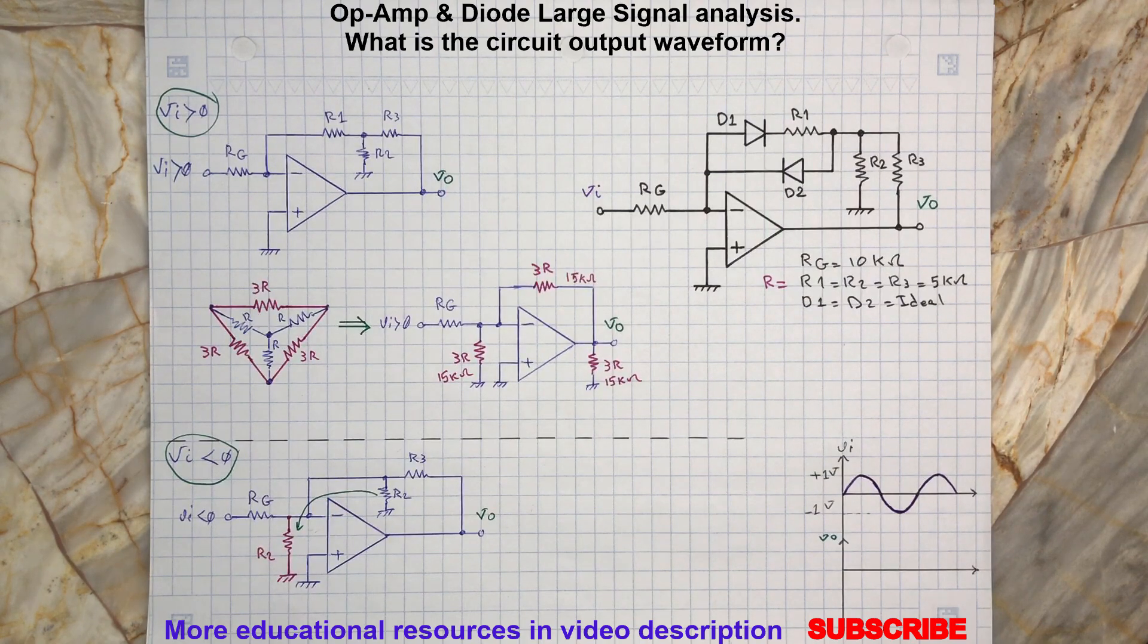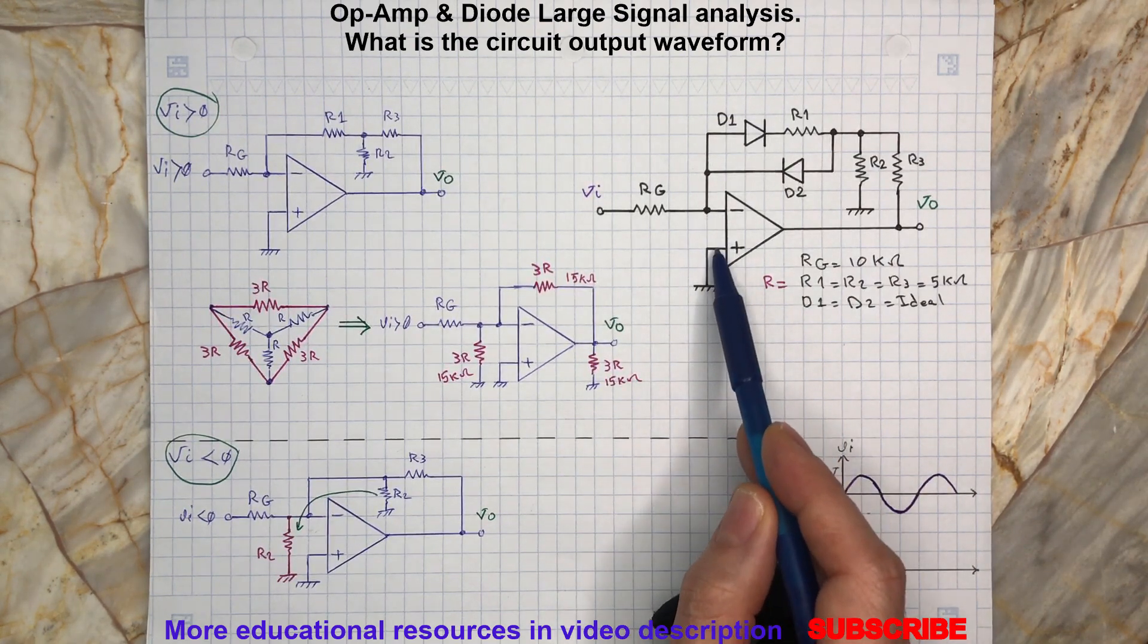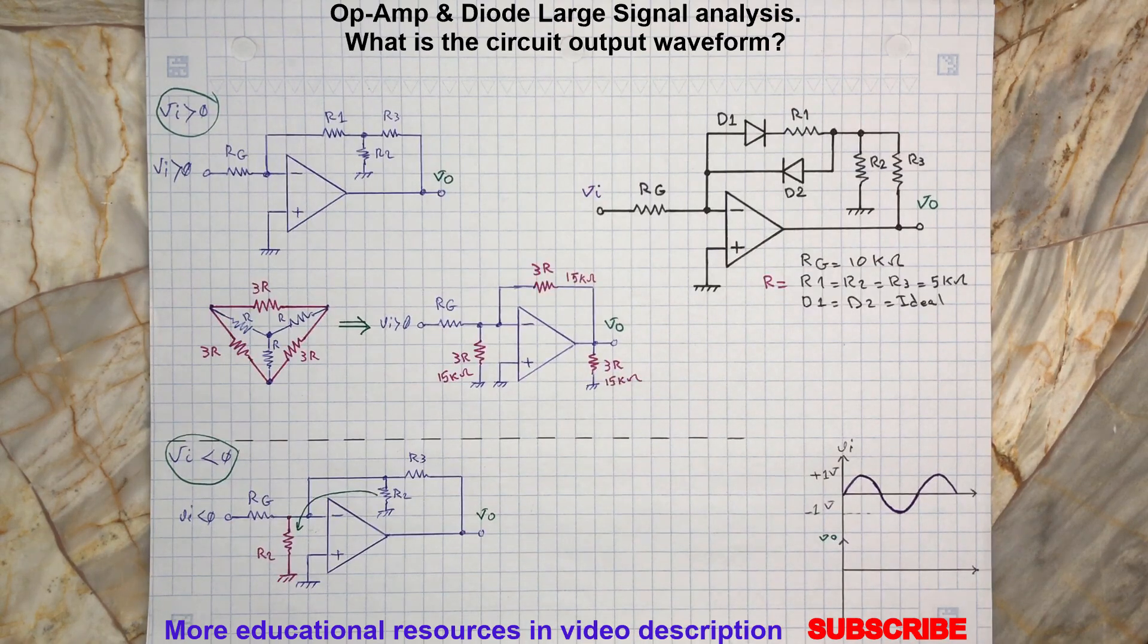At the same time, this will push the op-amp output to swing to negative voltage. The op-amp output will swing to its negative saturation limit because the V minus terminal is greater than V positive terminal. Remember that V minus is the inverting terminal and V positive is the non-inverting terminal.